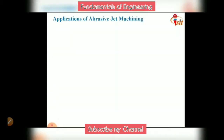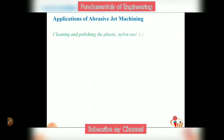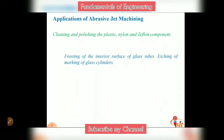Abrasive jet machining is used for cutting slots and thin sections, contouring and drilling operations, producing shallow cavities and deburring, and producing intricate hole shapes in hard and brittle materials. It is also used for cleaning and polishing plastic, nylon, and Teflon components, frosting the interior surface of glass tubes, etching and marking of glass cylinders, and machining super alloys and refractory materials.